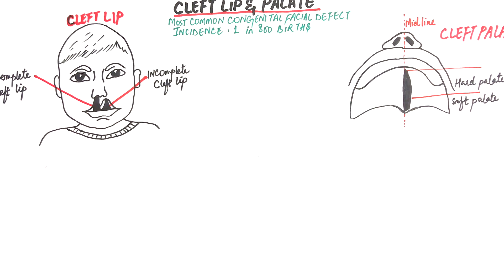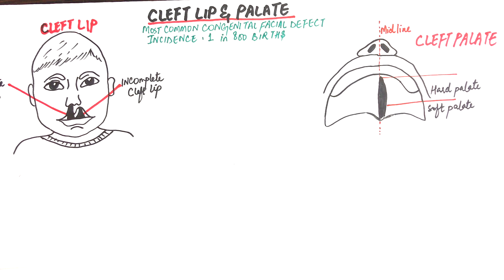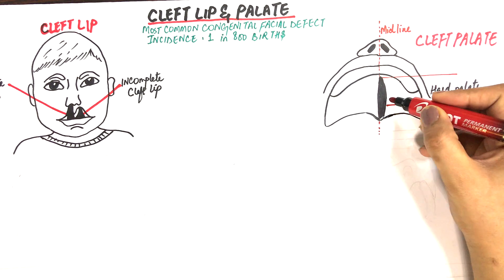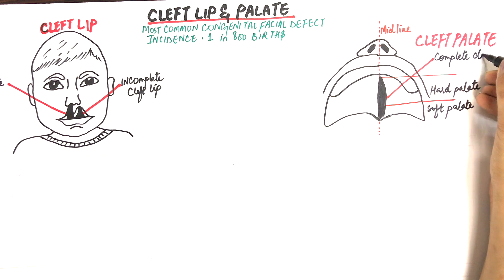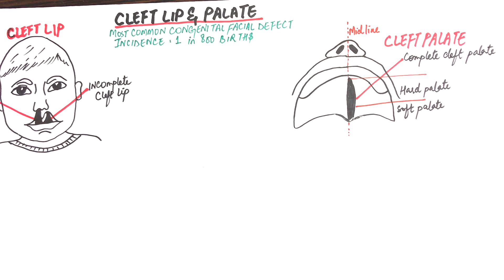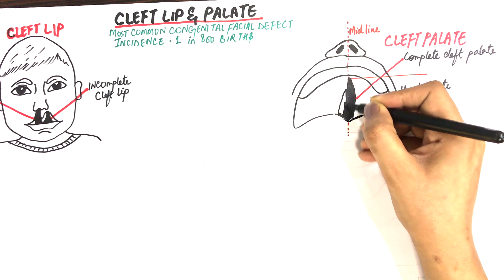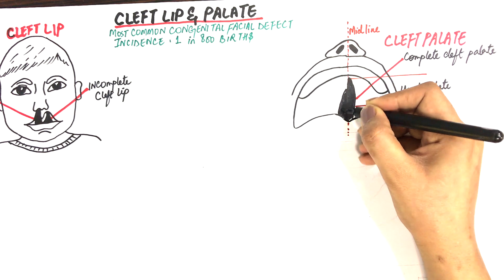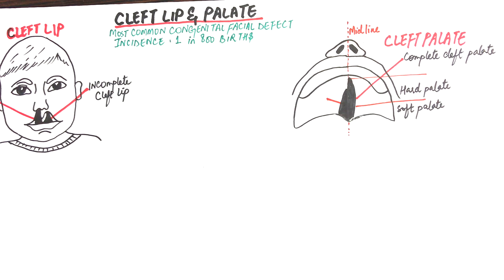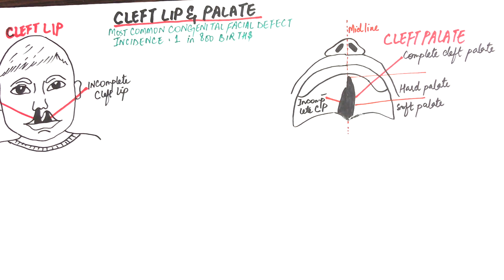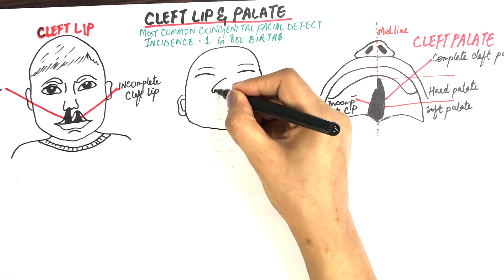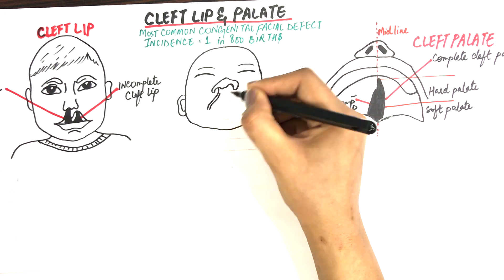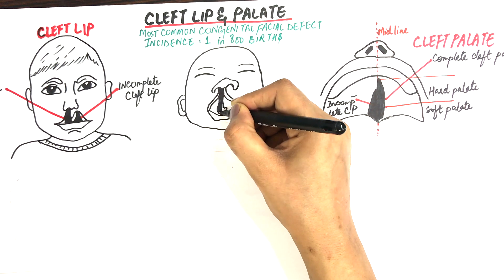On the other hand, a complete cleft palate is a cleft located at the entire length of the palate, affecting both the hard and the soft palates. An incomplete cleft palate is a cleft located on the posterior side of the palate. Both the cleft lip and palate can either be isolated or in combination with one another, as shown in this diagram.